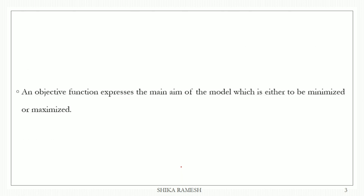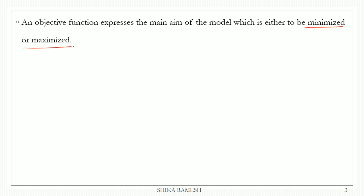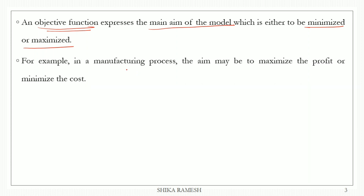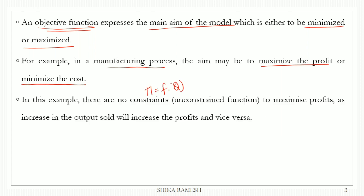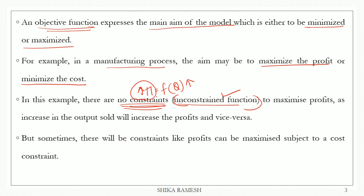One objective function involves maximization of a function and minimization of a function. The main aim is one objective function. For example, we will maximize the profits or we will minimize the cost. While we have a function which is a function of Q, we can have constraints on this function. Maximization of profits is subject to a cost constraint.